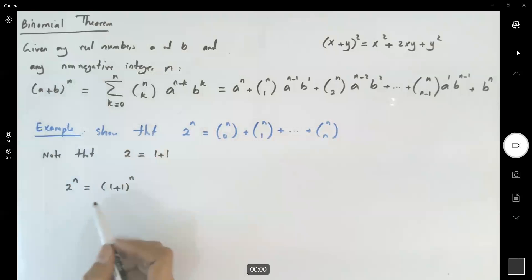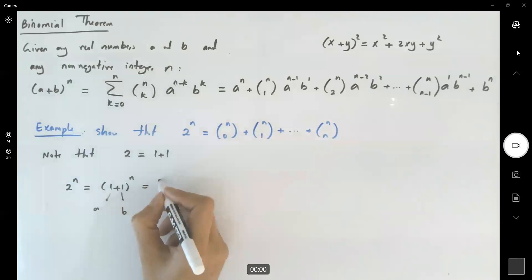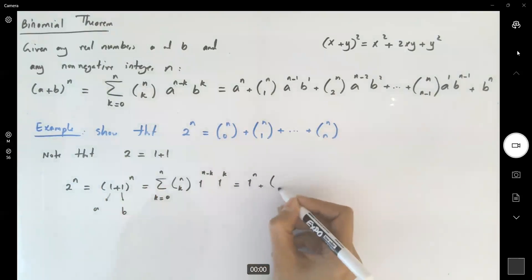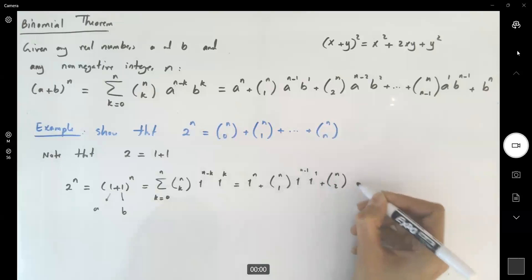So if you just follow the binomial formula, a is 1, b is also 1. So in the binomial formula we have the sum k of n, 1 to power n minus k, 1 to power k, k starts from 0, stops at n, which is 1 to power n plus 1 to n, 1 to n minus 1, 1 to the first power, plus 2 out of n, 1 to n minus 2, 1 to 2nd power, plus the rest of the terms.